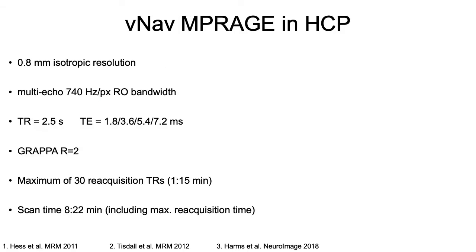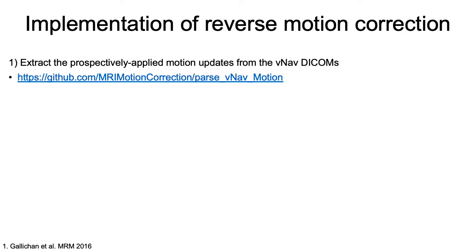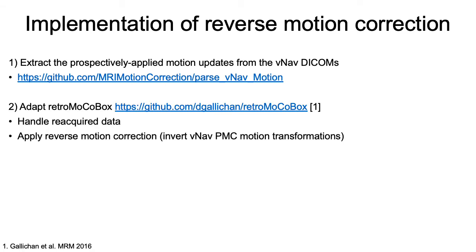The VNAV MP-rage scan had 0.8mm isotropic resolution and up to 30 reacquisition TRs were used; the scan time including maximum reacquisition time was 8 minutes 22 seconds. For more details see the paper by Michael Harms. To perform reverse motion correction we first extract the prospectively applied motion updates from the VNAV DICOMs using a Python script, then adapted RetroMocoBox to handle reacquired data and apply reverse motion correction by inverting the VNAV motion transforms.